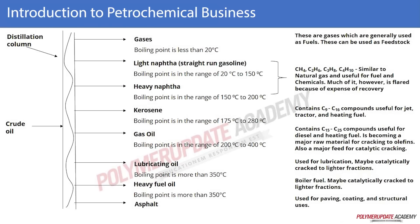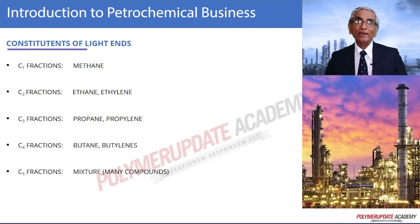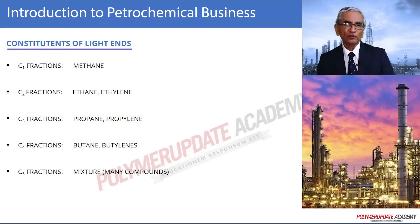This picture shows a distillation column and the various fractions produced. Gases come off at the top, followed by light naphtha, straight-run gasoline, heavy naphtha, kerosene, gas oil, lubricating oil, heavy fuel, and asphalt at the bottom. These fractions depend upon the temperature at which they come out.